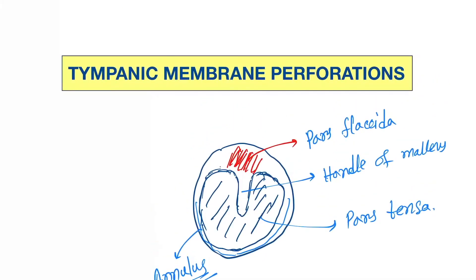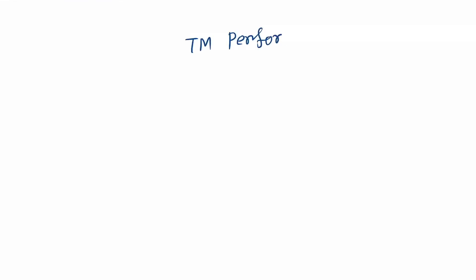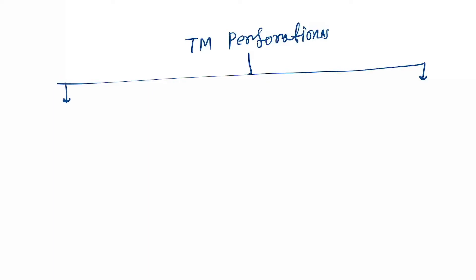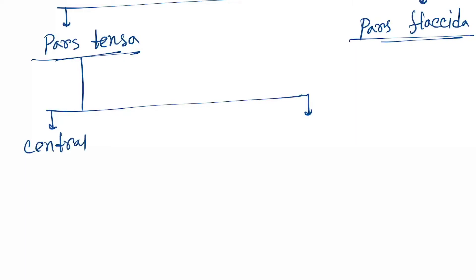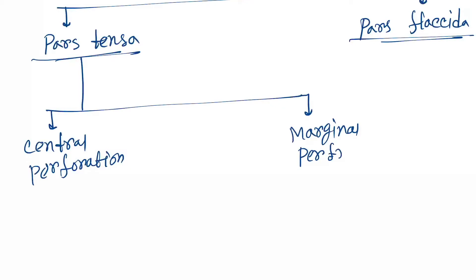Now let's classify tympanic membrane perforation. It may be classified into two categories: first one is perforation in the pars tensa, and the other one is perforation in the pars flaccida. Pars tensa perforations are further classified based on central perforation and marginal perforation.